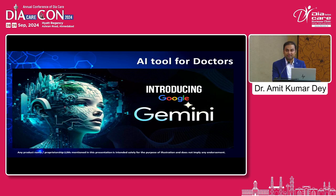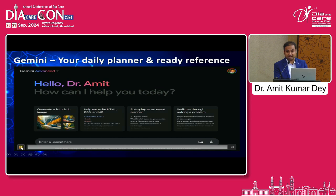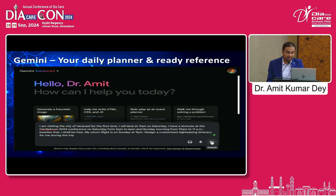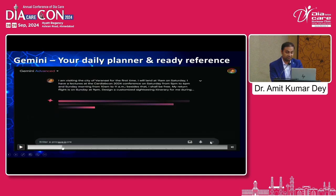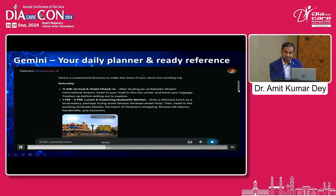Many people ask about Gemini by Google. The best part of using Gemini is helping you plan your itinerary. For example, when attending a conference in Varanasi, you can prompt: 'I'm visiting Varanasi for the first time, landing at 11 a.m. on Saturday. I have a lecture from 5 to 6 p.m. on Saturday and from 10 to 11 a.m. on Sunday. My return flight is Sunday at 9 p.m. Design a customized sightseeing itinerary for me.' Based on your conference schedule and travel preferences, it gives you exactly when to go to the Ghats. It can be pushed to Google Calendar and sync with all your travel plans.